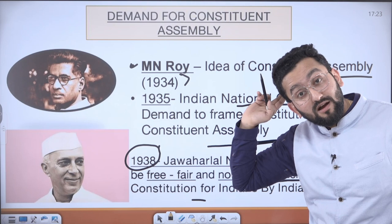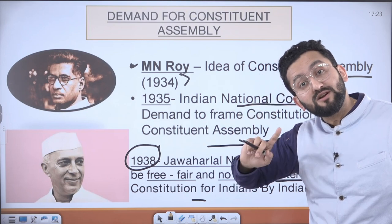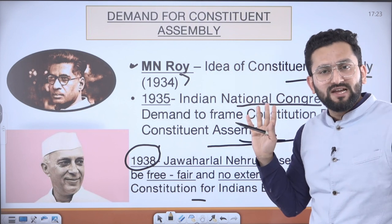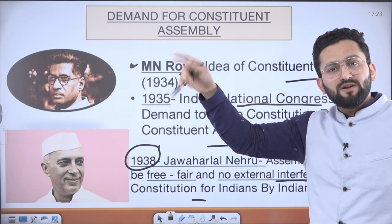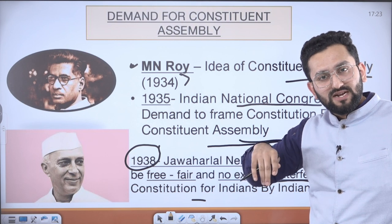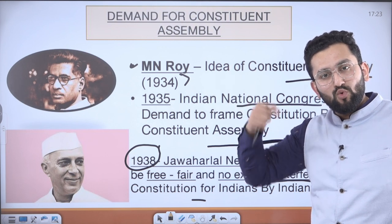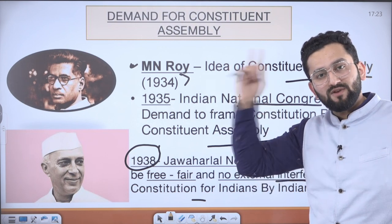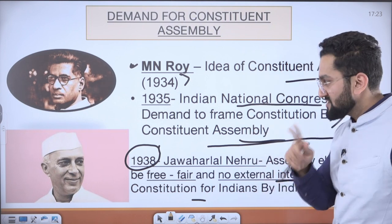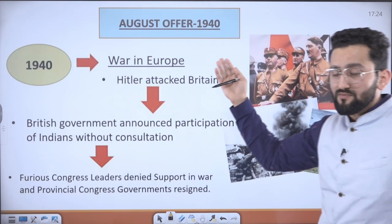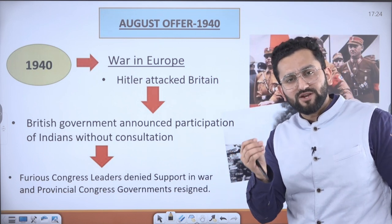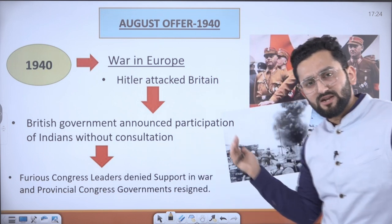Instead, election happened from provincial assemblies. The other method was nomination — which happened through the princely states. It means there was no election for members coming from a princely state; whoever was the authority there was allowed to nominate their person to the Constituent Assembly. That's why I used two words: elected and nominated. Now, the August Offer — we also talked about this briefly in the previous session.